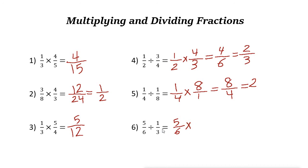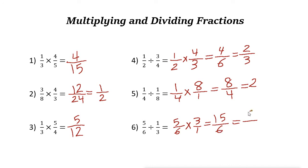Next: keep 5/6, change the sign to multiplication, and flip 1/3 to 3/1. Multiply: 5 times 3 is 15, and 6 times 1 is 6, giving 15/6. You can simplify — both are divisible by 3: 15 divided by 3 is 5, and 6 divided by 3 is 2. The answer is 5/2.